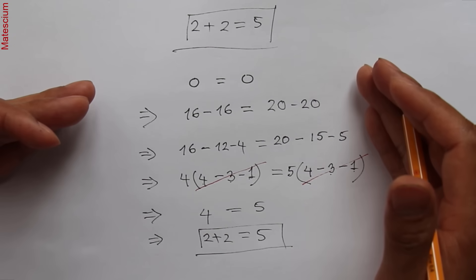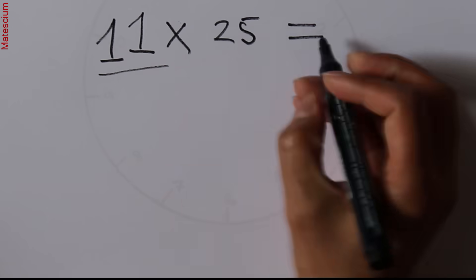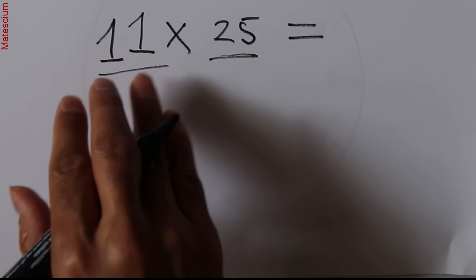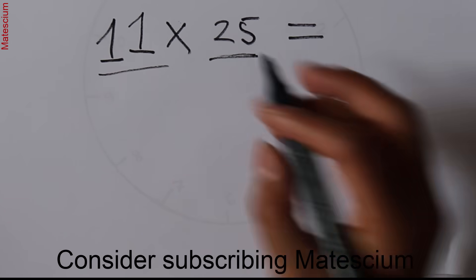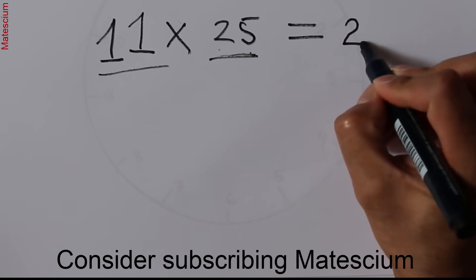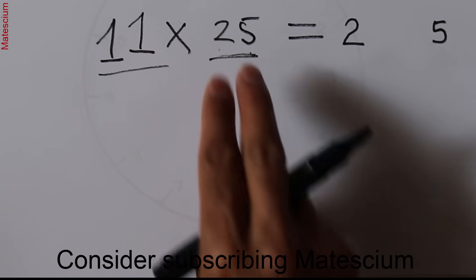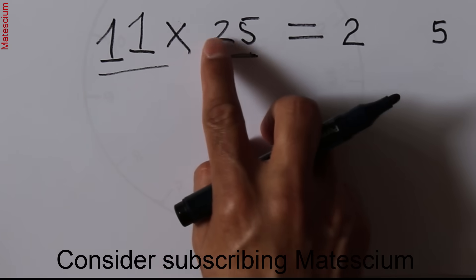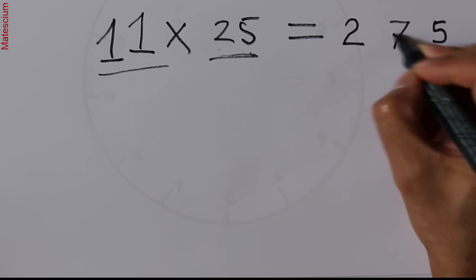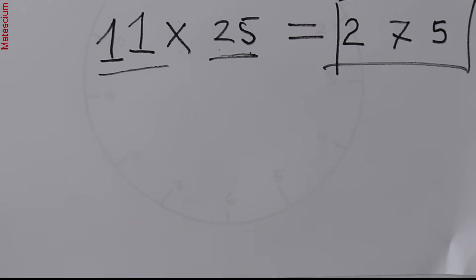If you know where exactly I made the mistake, you're welcome to write it in the comment section. Now let me show you something different: how to multiply any number by 11 without a calculator within 5 seconds. Consider 25 multiplied by 11. Take the digits 2 and 5, place them apart with a gap in between, then add them: 2 plus 5 is 7. Place the 7 in the middle — the answer is 275.